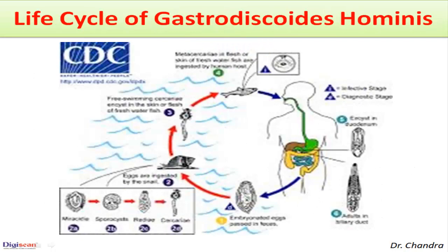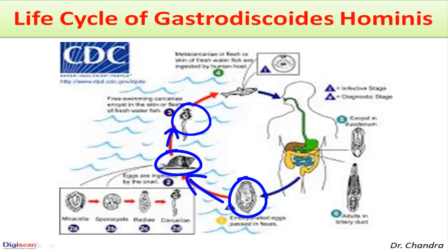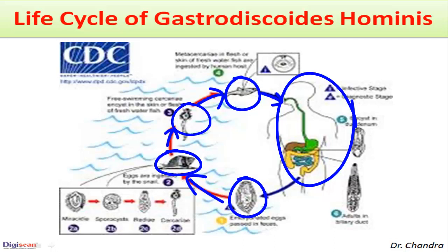Here is the diagrammatic representation of the life cycle. Ova are taken up by the snail, in which they develop into infective larvae that penetrate the fish or attach to vegetation. Upon eating infected fish or contaminated vegetation, man gets the infection, and the eggs are then passed from the stool back into the environment.